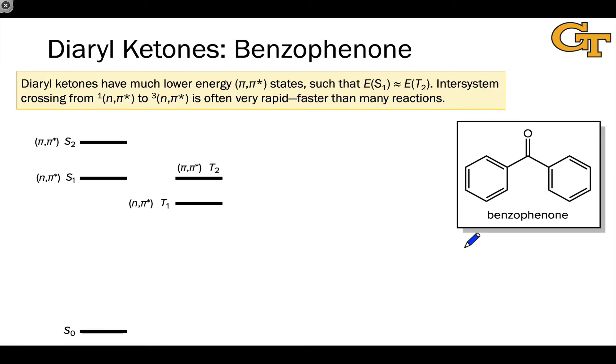At the other extreme, we have conjugated ketones such as diaryl ketones. And benzophenone is a classic example of a diaryl ketone. With all that π delocalization, the energy of the π,π* state is lowered substantially relative to the dialkyl case, relative to acetone.